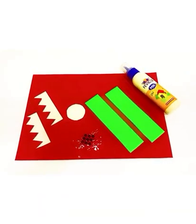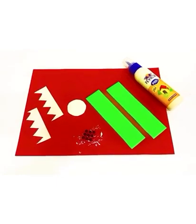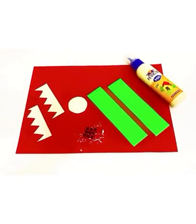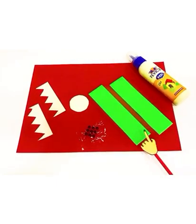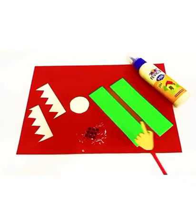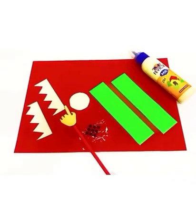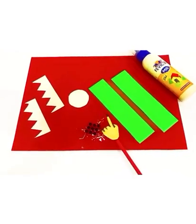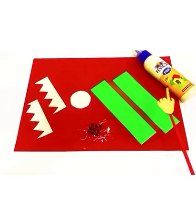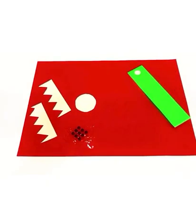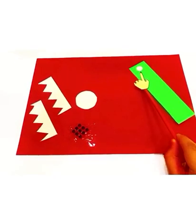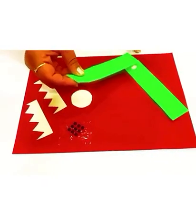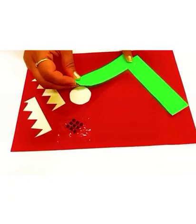So children, let's begin with our first activity. For that, we need two strips of green origami sheets, two white strips with this zigzag pattern, one circle, some bindis and fevicol. Now put some fevicol like this and paste the other strip on it like this.